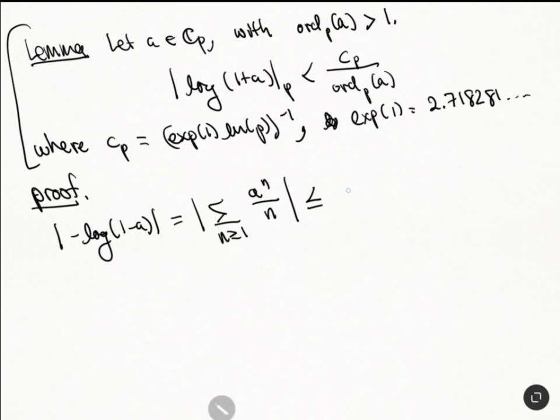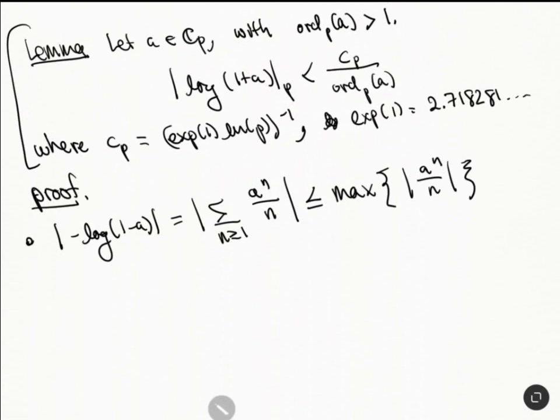This is less than or equal to the maximum of these by the non-Archimedean property. So the maximum of this corresponds to the minimum valuation, ord_p(a^n/n).